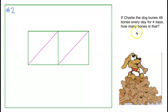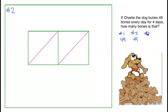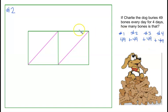Problem number two: if Charlie the dog buries 49 bones every day for four days, how many bones is that? That's going to be one very busy dog. Day one he buried 49 bones, day two 49 bones, day three 49 bones, day four 49 bones — we'd have to add all of those up. Since we are adding the same number, 49, we can just multiply it by four.